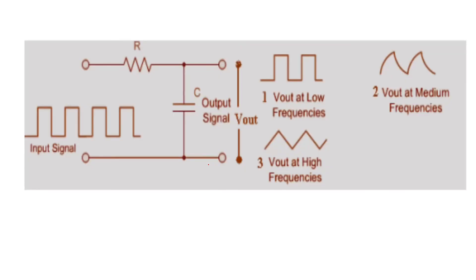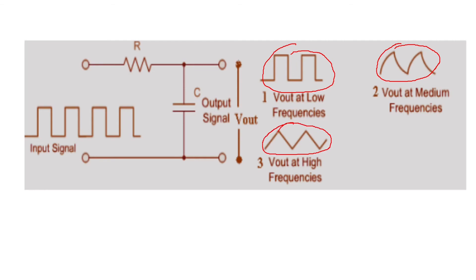There are three cases for the output depending on input frequency. When the input frequency is very low, the output looks like a nearly square shape. When the input is at medium frequency, the output shows the charging and discharging of the capacitor. When the input frequency is high, you get a triangular wave at the output with a lesser amplitude.